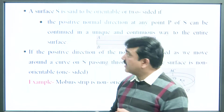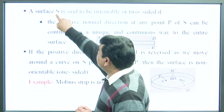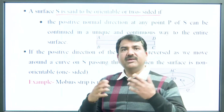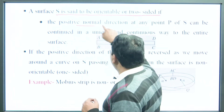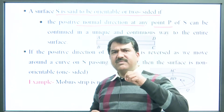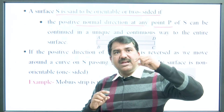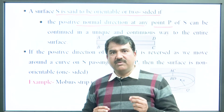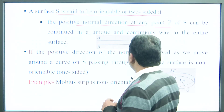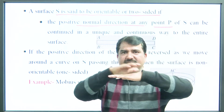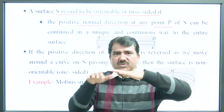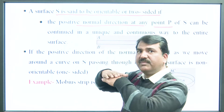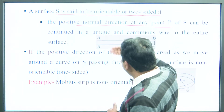Now, a surface S is called orientable or two-sided if the positive normal direction at any point P can be continued uniquely and continuously to the entire surface. For example, a piece of paper (a strip) is a two-sided surface — one side is the front and the other is the back.